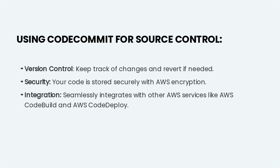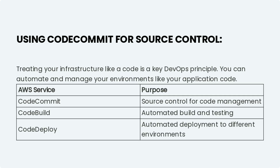Treating your infrastructure like code is a key DevOps principle — you can automate and manage your environments just like your application code. AWS provides a comprehensive set of services to support your DevOps practices, from source control with CodeCommit to automated build and testing with CodeBuild, and automated deployment to different environments with CodeDeploy.